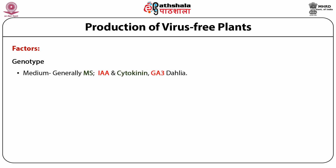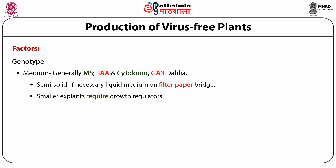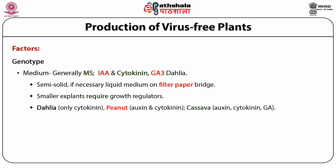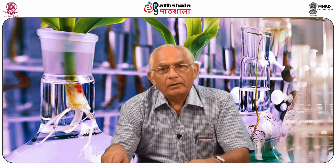The medium is also a general factor. Normally MS medium has been used, supplemented with IAA and cytokinin. In the case of Dahlia, it also required gibberellic acid. Semi-solid medium is generally used, but if the shoot tip is sensitive to agar, liquid medium on a filter paper bridge can be used, ensuring the shoot tip is not submerged. Smaller explants require growth regulators, and the requirement may vary: Dahlia required only cytokinin, peanut required auxin and cytokinin, and cassava requires auxin, cytokinin, and gibberellic acid.